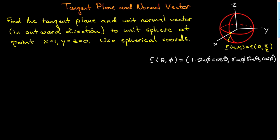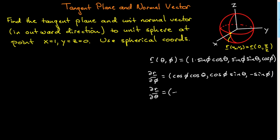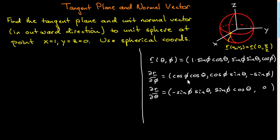We're going to need to take derivatives of our parametrization — we always need to do this for working with surfaces. It's often better when working with spherical coordinates to differentiate with respect to φ first, so the minus signs will be a little bit nicer. We compute dr/dφ and dr/dθ, and I'll leave a little room here to take the cross product. I've lined them up in columns so that taking the cross product will be easy.